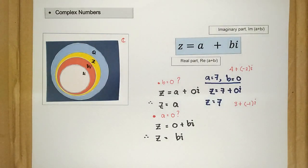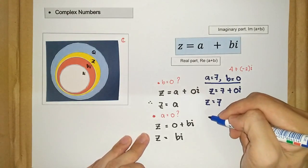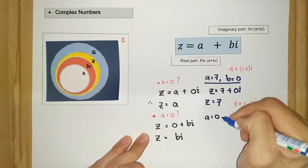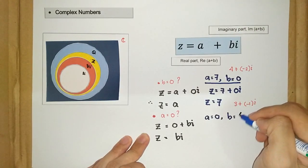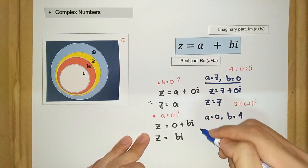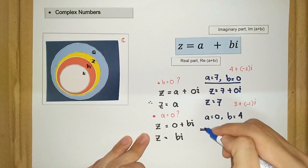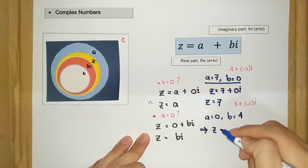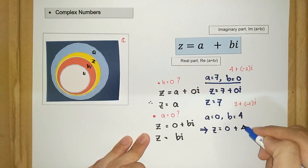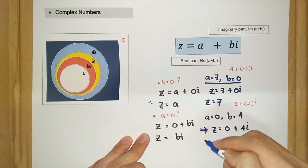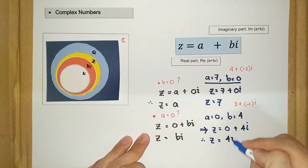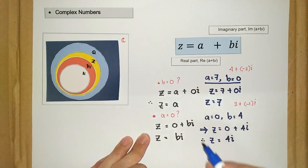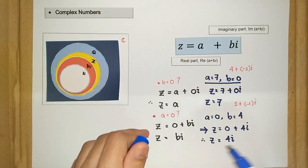For instance, let's say a equals 0 and b equals 4. What happens here is z equals 0 plus 4i, so z equals 4i. This is what we call a pure imaginary number.